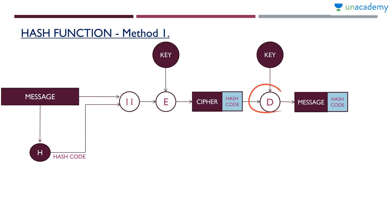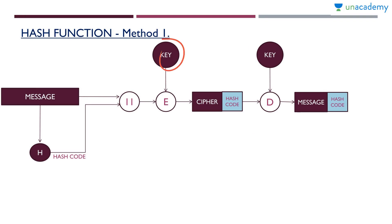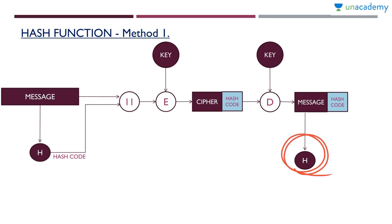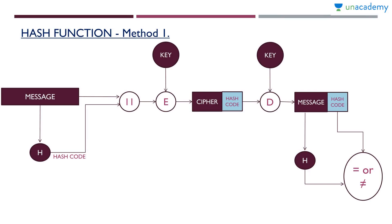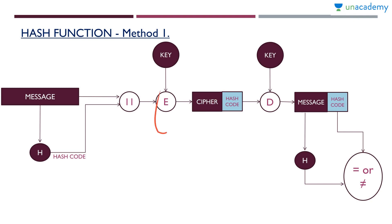At the receiver side, he will have the decryption algorithm and the same key. These are cases of symmetric cryptography — we are using the same key. There will be a decryption algorithm; we apply the key and get message plus hash code. Now the receiver will apply this message to the same hash function and get a hash code as output. He will then take the separated hash code and compare it with the output from the hash function. If equal, the message is authentic; if not equal, it is not authentic. So here both authentication and confidentiality are achieved because the message is encrypted before sending.